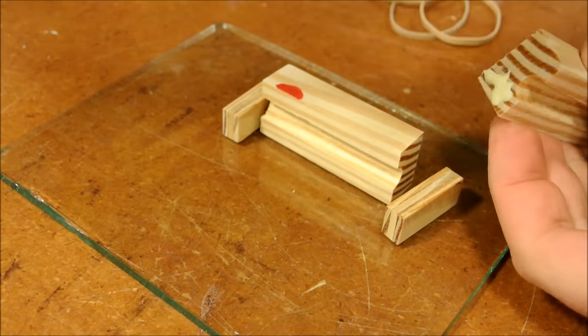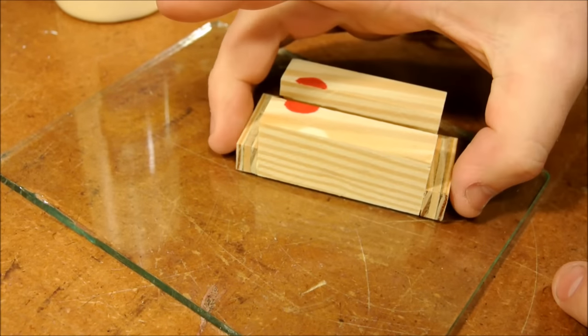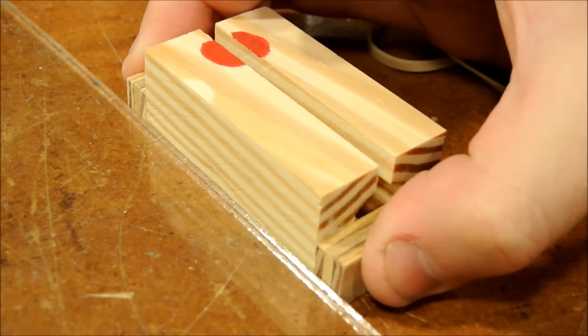These plywood blocks should only be glued to one half of the jig. You can hold it together with a little nail if you want.